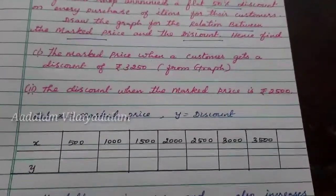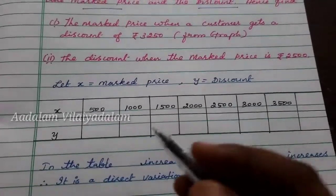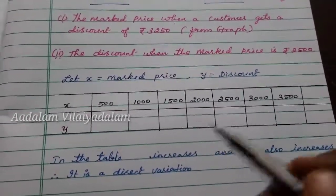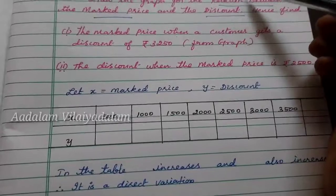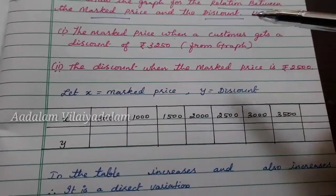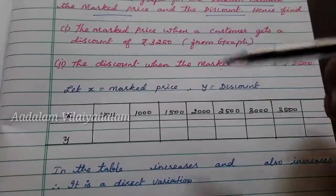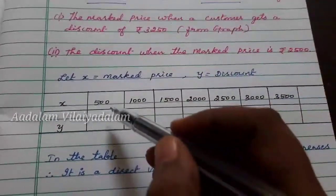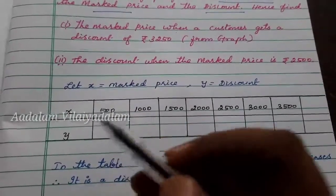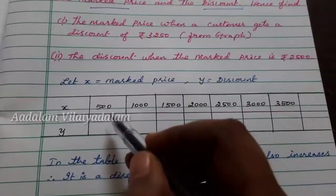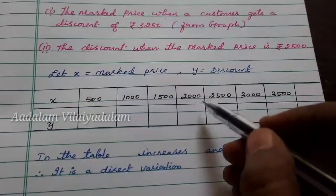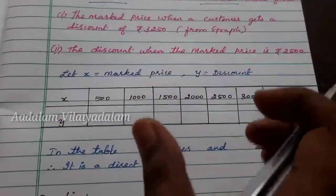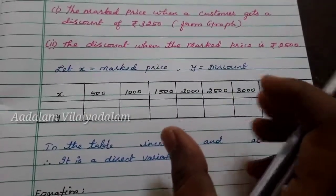We write the values of x and y and create the table. The government shop announces a flat 50% discount. We take a minimum value — here I have chosen 500. So if a dress is 500, then the next values are 1000, 1500, 2000, 2500, 3000, 3500 and so on. We can take nearly 5 to 6 values.